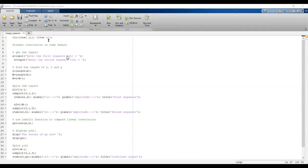x equals input enter the first sequence, h equals input enter the second sequence. After getting the input from the user, we have to calculate the length of x and the length of h. Then find the length of y. The length of y is length of x plus length of h minus 1. Here we have used the variables l and m. The length of y, which is m, equals l plus m minus 1.